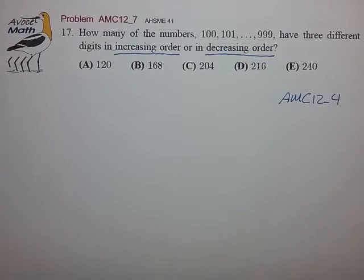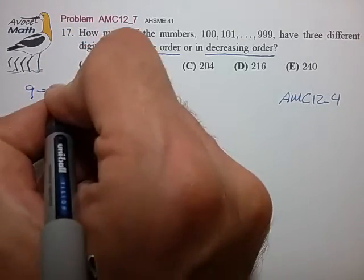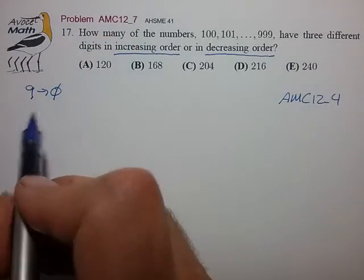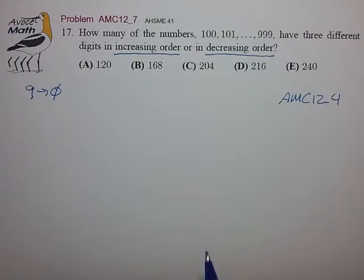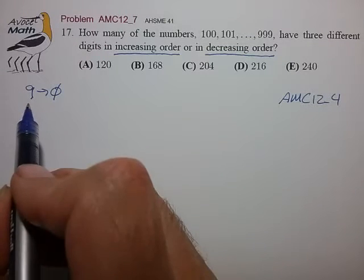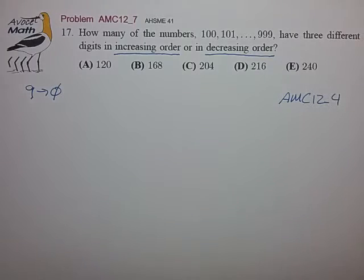So it appears in order to form a three-digit integer with decreasing order we can select three possible digits out of the set nine through zero, and any such combination of three distinct digits from the set nine through zero can be rearranged in decreasing order and form a valid three-digit integer. So essentially this comes down to a combinatorics problem just like it did in problem AMC 12 underscore four.